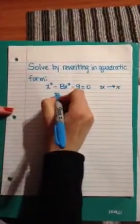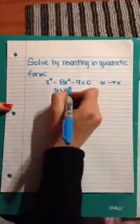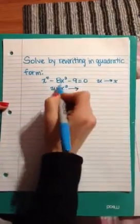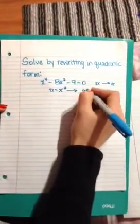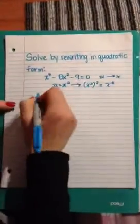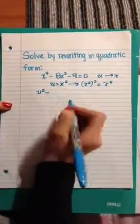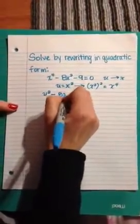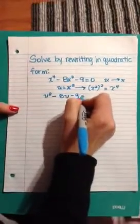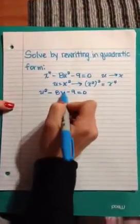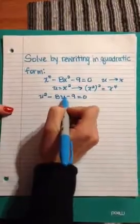So over here we're going to have u equals x squared, because when we square x squared, we're going to have x to the fourth, which gives us this right over here. So first we're going to have u squared minus 8u minus 9 equals 0. Remember, we have to replace the x squared with u's.